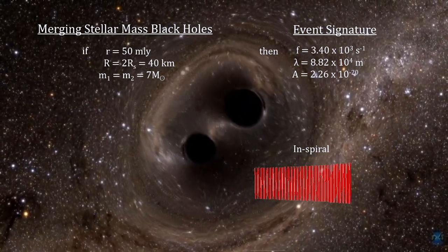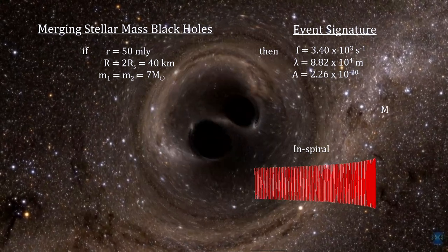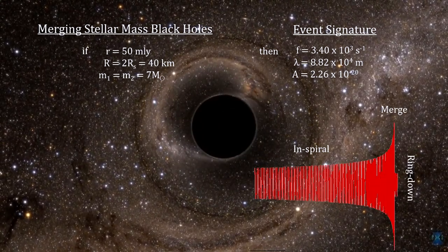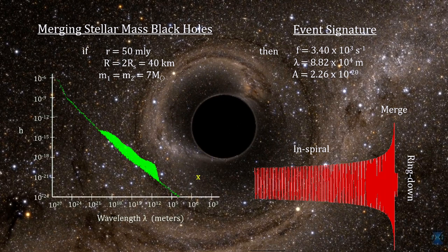As the orbital radius shrinks to twice the Schwarzschild radius, and the black holes are approaching each other's photon sphere, their velocities approach 70% of the speed of light. This produces a shorter gravitational wavelength and a larger amplitude, putting this kind of event well into the theoretically detectable area.